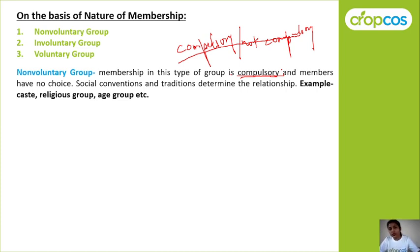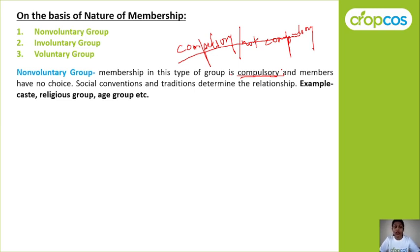In a non-voluntary group, whatever rules and norms exist in the group, all members have to follow them. For example: your caste group, religious group, age group, sex group, etc.